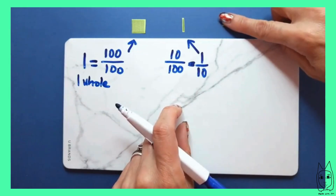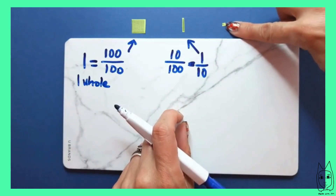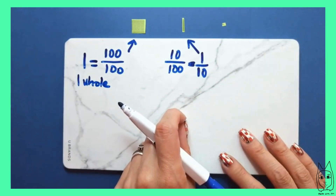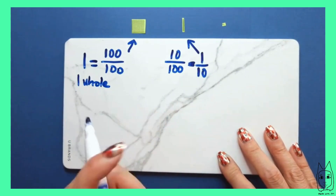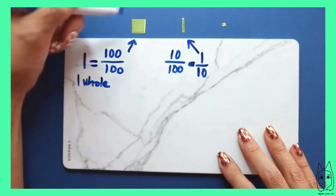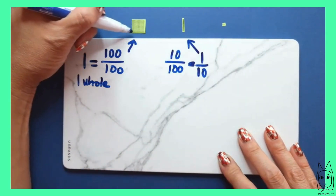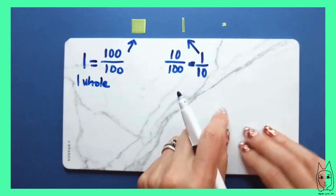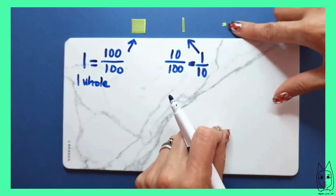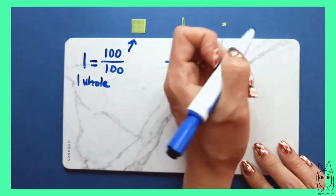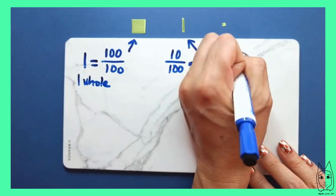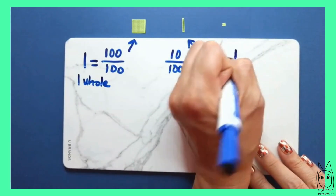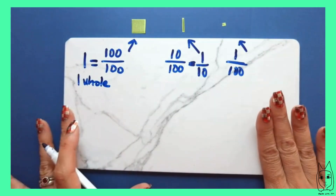We're also going to be using this little guy. This little guy is going to represent one hundredth — it's one of these inside the hundred grid. So this one is made up of a hundred of these little guys, and that would be the fraction one over 100. These are the models we're going to use.